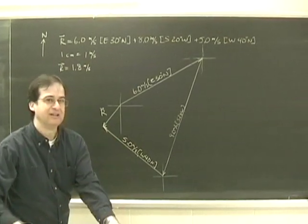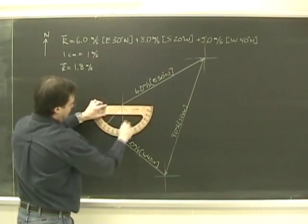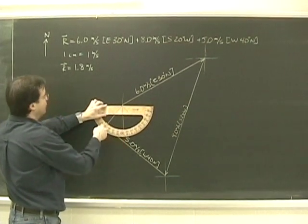And I use my protractor. And you measure the angle from the start of the vector, not the end of the vector. So I put it at the beginning. And it is 10, 20, 30, 40. So this is south 40 west.